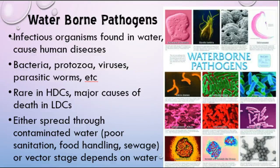Most of these waterborne pathogens are either spread through contaminated water — in a lot of cases that's due to poor sanitation systems or exposure to raw sewage — and in some cases that can also bleed into food handling, because if you're washing your food with contaminated water the pathogens travel with it. It can also come down to not washing your hands often enough, because you can have fecal matter on your hands that carries these pathogens.